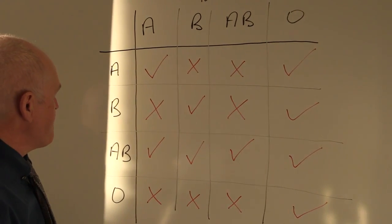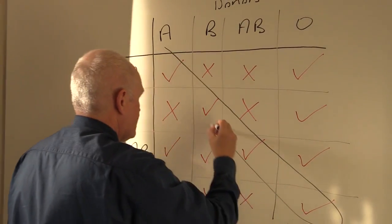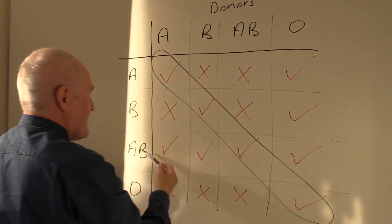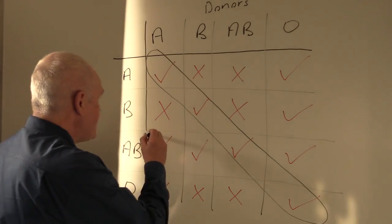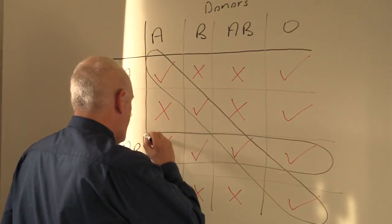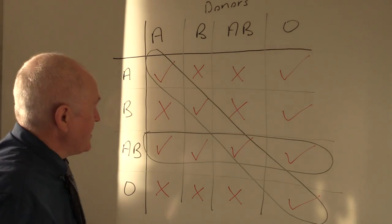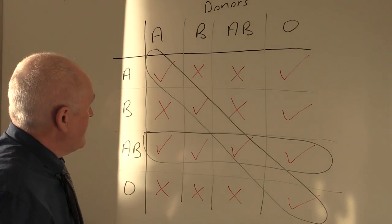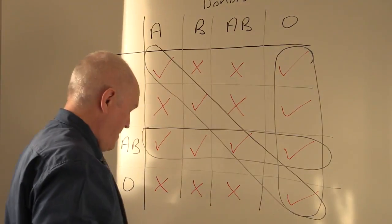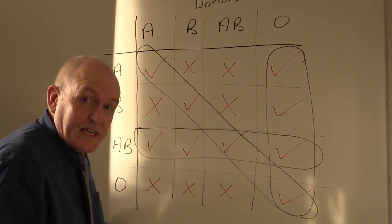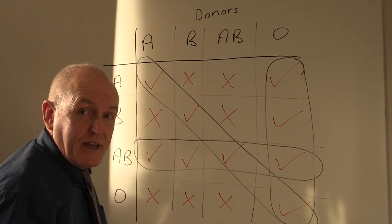So what this means in theory is that everyone can give to their own blood type — A can give to A, B can give to B, AB to AB, and O can give to O, just looking at the ABO system. AB in theory can receive from anyone, so AB can be called the universal recipient. O in theory can give to anyone, so O is described as the universal donor. But of course when we take the Rhesus factor into consideration, the true universal donor will be O negative and the true universal recipient will be AB positive.